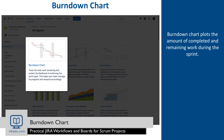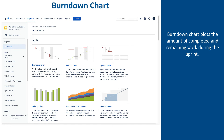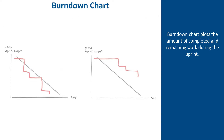The burndown chart in Jira allows one to predict if a team will complete its work in time, and it indicates the amount of completed and remaining work during the sprint. Moreover, it also reveals all the changes in the work scope. This chart is very useful in analyzing the team's work.